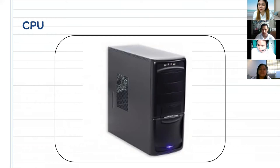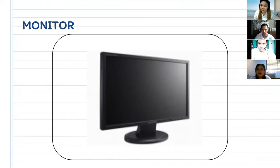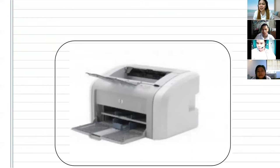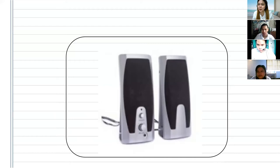It is a CPU. Very good. Next, we have here the monitor. It is a monitor. Again — it is a monitor. Very good. Next, it is a printer. It is a printer. Lastly, we have the speakers. It is a speaker. It is a speaker.